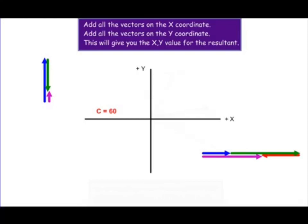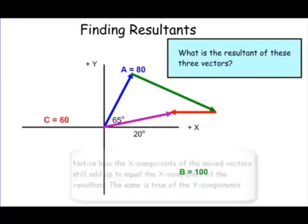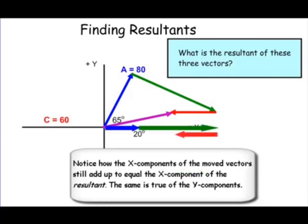These two vectors are the legs of a right triangle that define the resultant. Taking the sum of all the x's on the x axis and the sum of the y's placed head to tail, our resultant is this vector right here. You can use the Pythagorean theorem to find the magnitude of that vector, and then use the tangent function to find its precise direction. Going back to the previous slide, you can see we get the same resultant using either method.